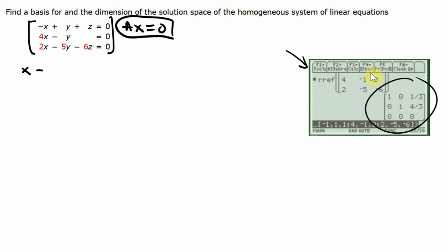That says X plus one-third Z equals zero, and Y plus four-thirds Z equals zero. Notice if I look at the main diagonal, I have a zero at the Z term, which denotes that Z is the floating parameter. So let Z equal to some parameter T, where T is any real number.